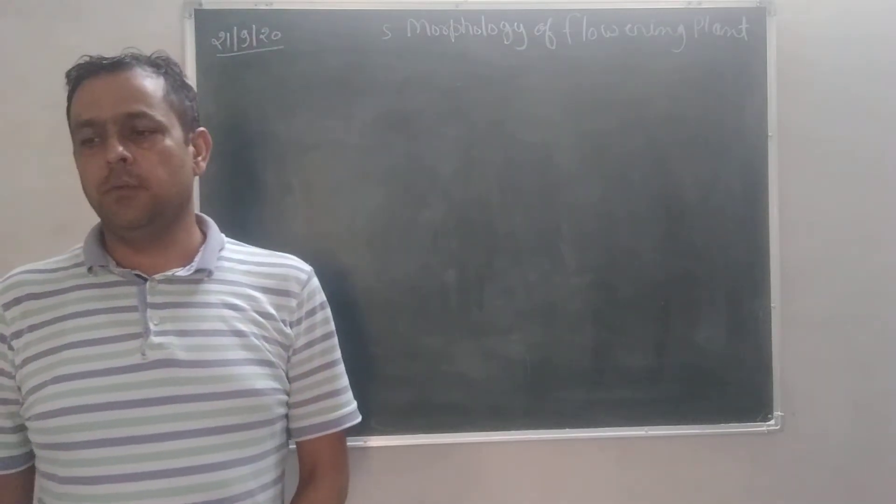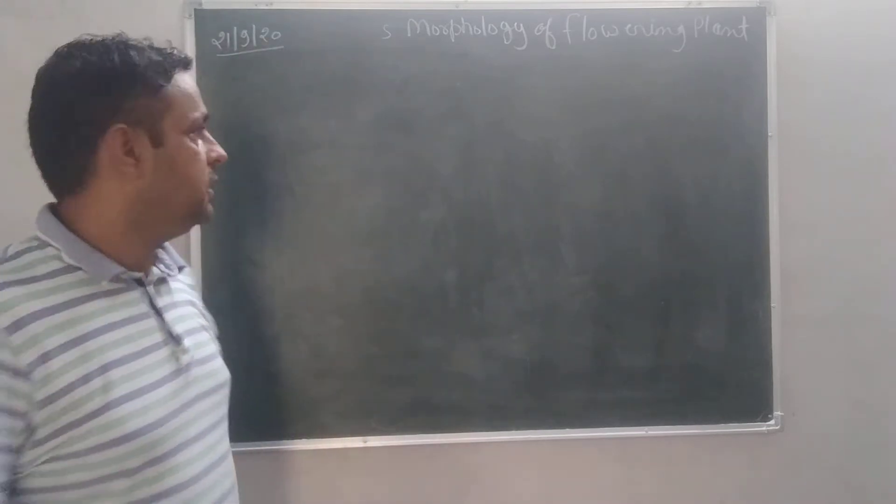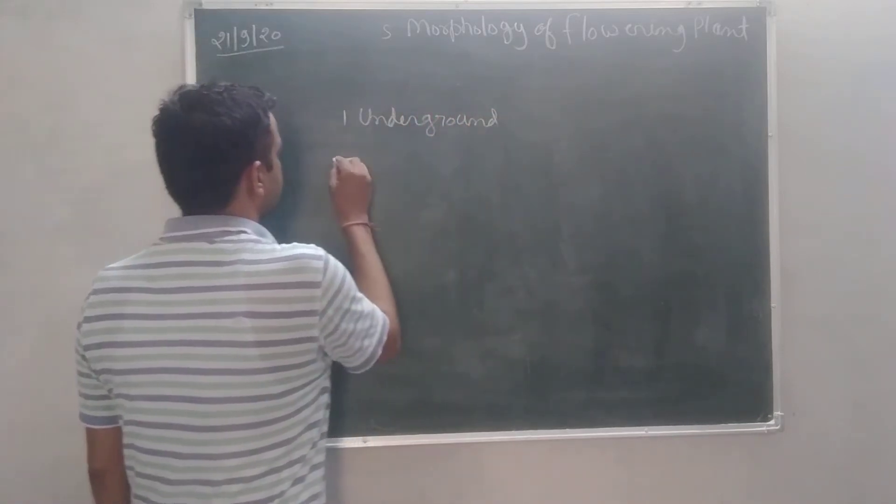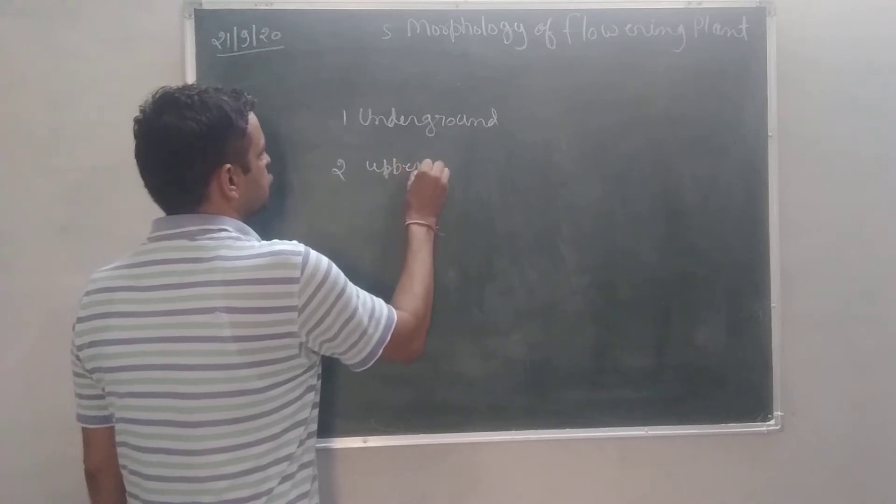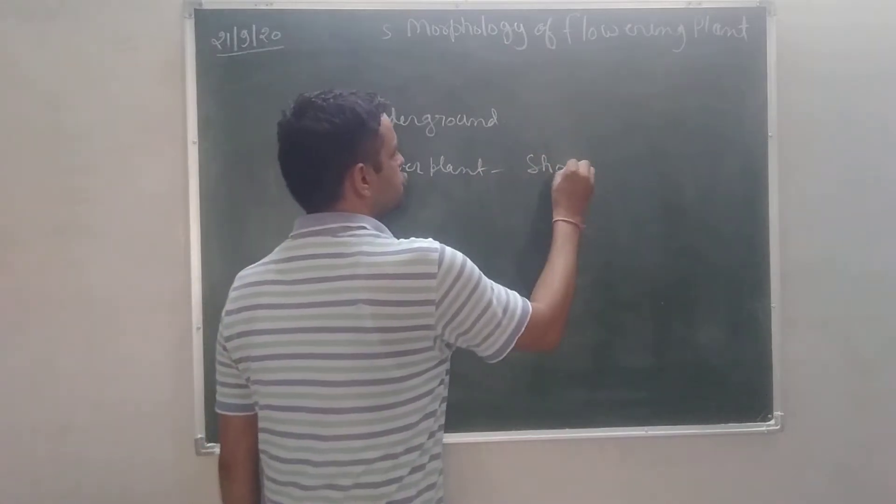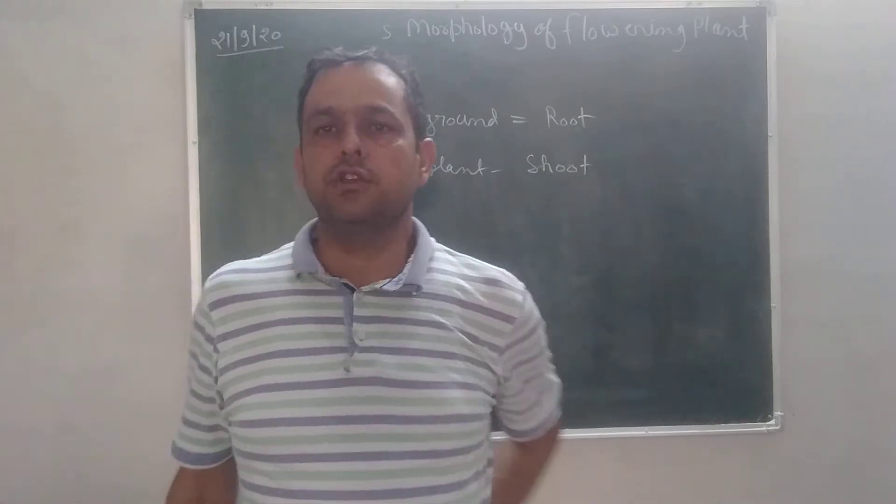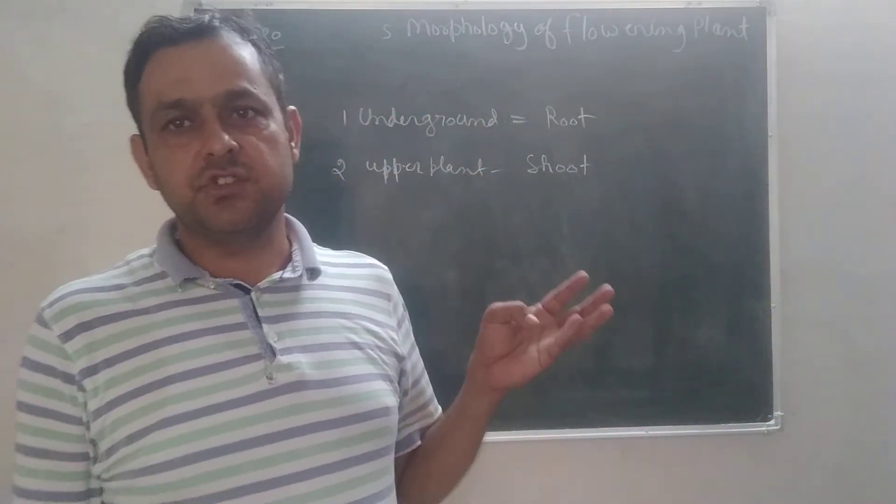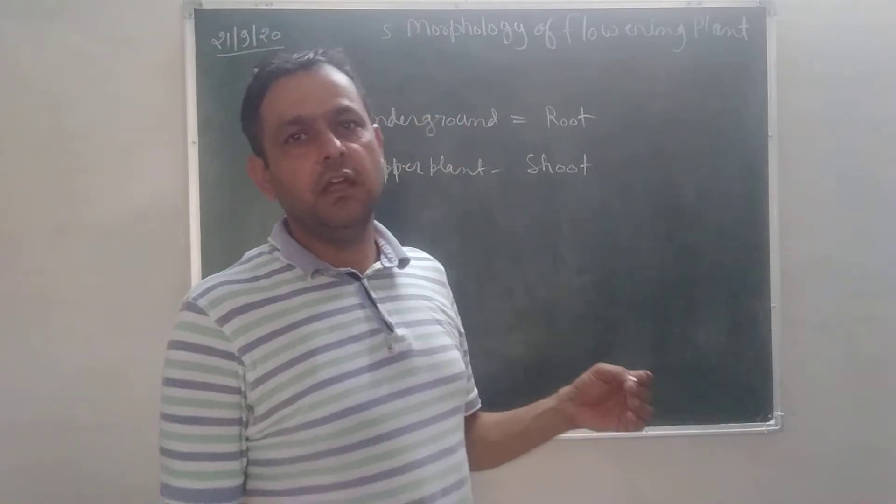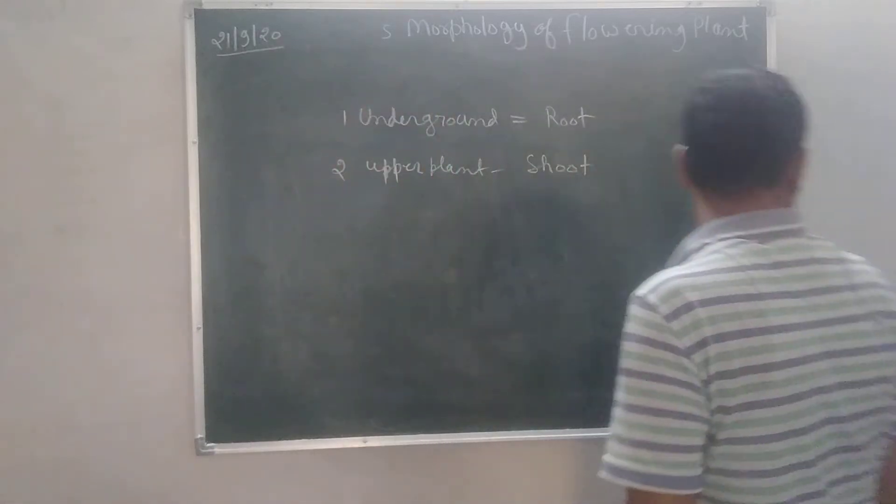First of all we are starting from the parts of the plant. Whenever we divide a plant in two parts, the first is underground and second is upper part. The upper part of plant is called Shoot and the underground part of a plant is called Root. In Shoot, we study about the main axis, stem, leaves, flowers, inflorescence, fruit and seeds. And in underground part, we study about root.